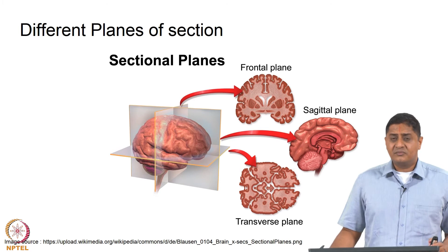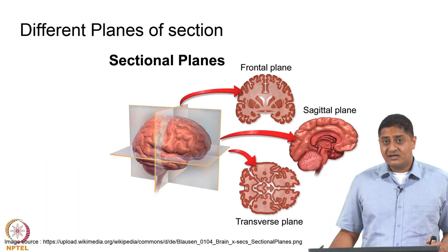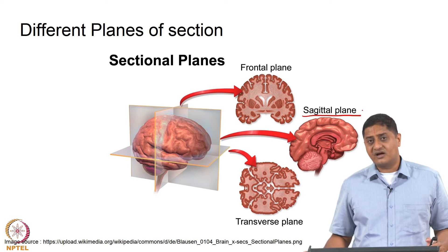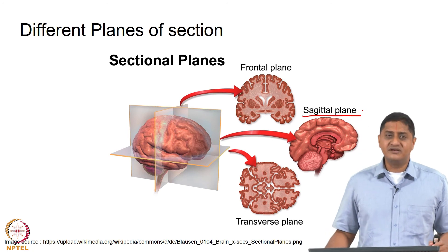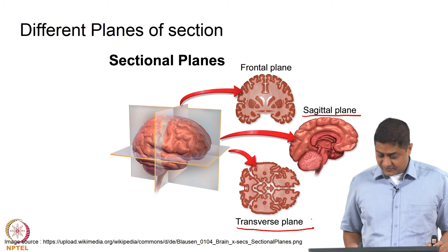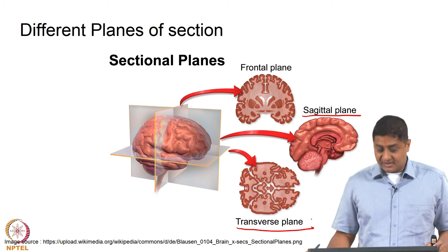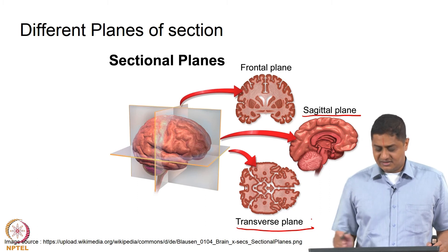We can also divide the brain into multiple sections. The section that divides the brain into left and right halves is called a sagittal plane; if it divides into two equal halves it is called a mid-sagittal section. The section that divides the brain into a top and a bottom part is called a transverse section or transverse plane. The plane that divides the brain into a front and back is called the coronal plane or frontal plane.